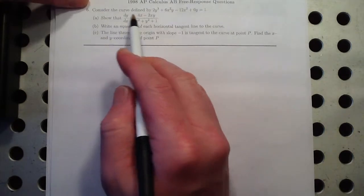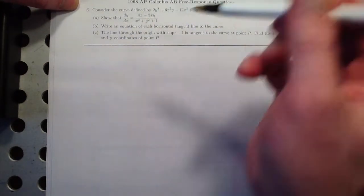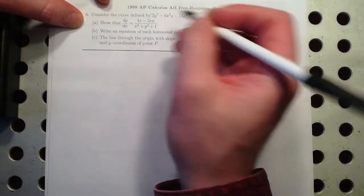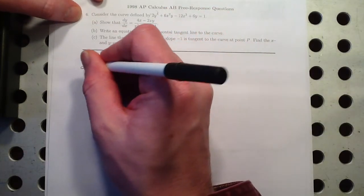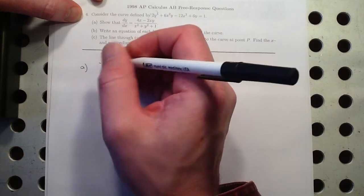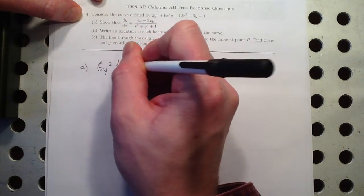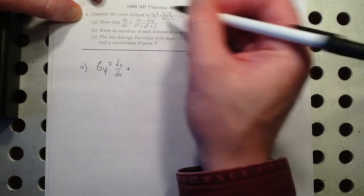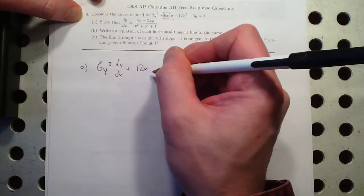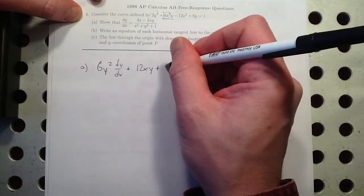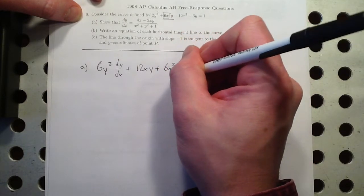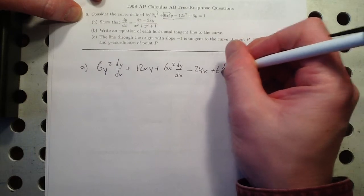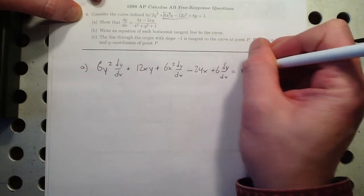All right. And number six. Consider the curve defined by this. And they want us to show that that's the derivative. That's just implicit differentiation. So let's see if we can do it. Part A, we've got 2 times 3 is 6, y squared, dy dx, plus product rule on this. I'm going to call this the first. So the derivative of the first would be 12x times the second, plus the first, 6x squared, times the derivative of the second, minus the derivative of that is just 24x. The derivative of that is 6 dy dx equals the derivative of 1 is 0.